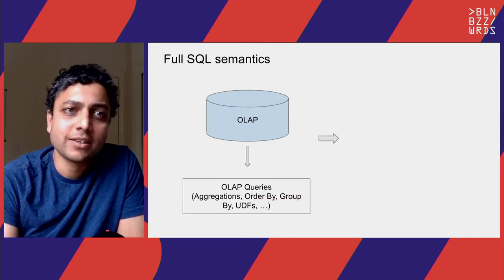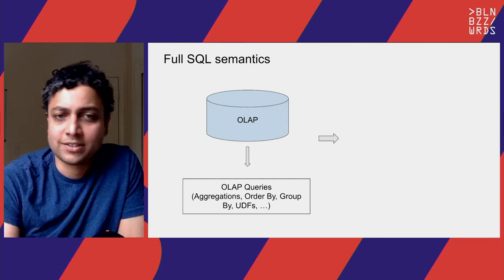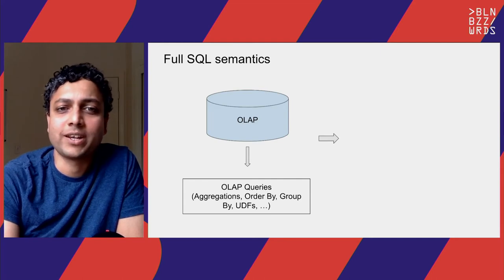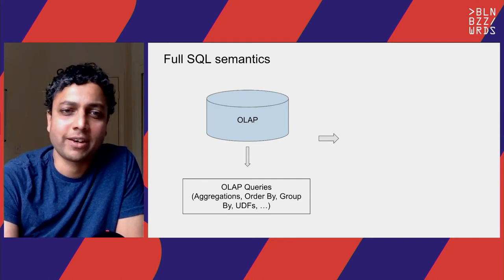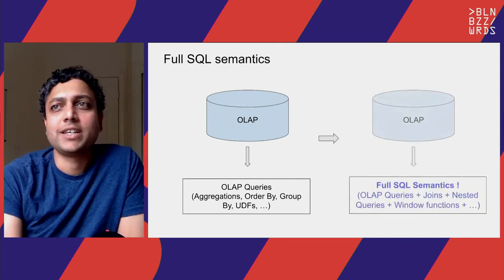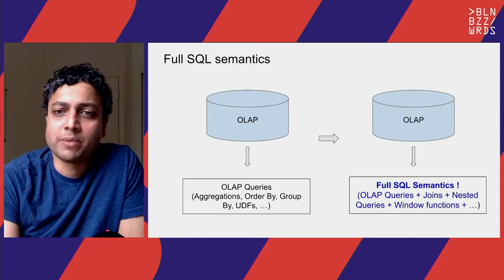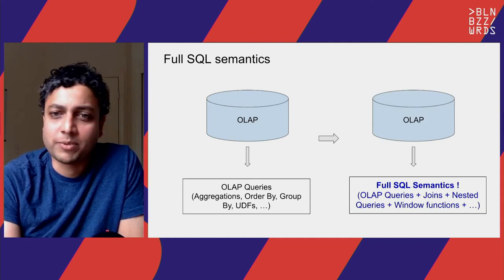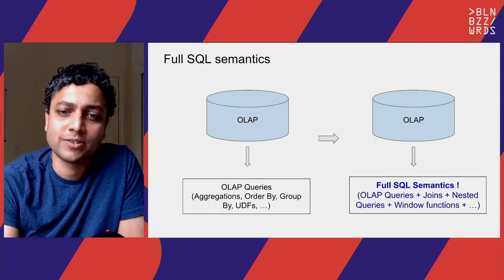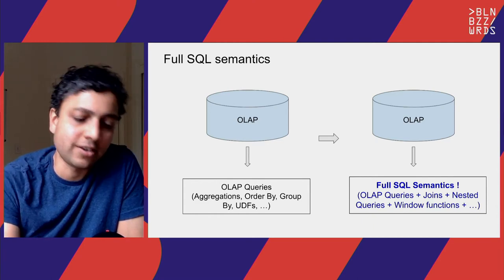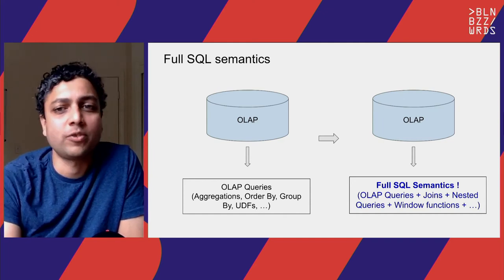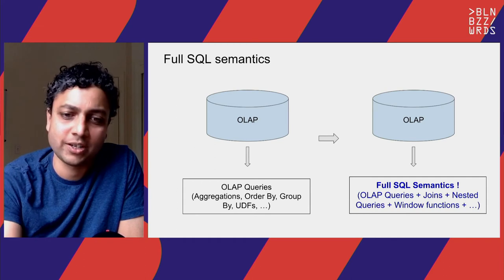On a similar line, in the old days SQL semantics were simpler — OLAP queries were mostly limited to aggregations, ORDER BY, and GROUP BY. But now, more and more people demand full SQL semantics, which includes joins and nested queries. This reflects the fact that more kinds of people are using OLAP and more powerful use cases are being built on it.